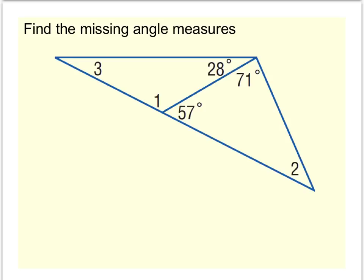To find angle 1, first recognize that angle 1 and this adjacent angle 57 degrees form a linear pair. Linear pairs are supplementary, so that means angle 1 must be 123 degrees, because 123 plus 57 makes 180 degrees.